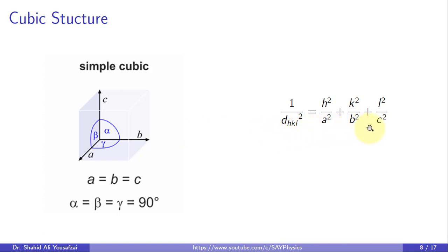This relationship can be expressed mathematically as 1/d² = h²/a² + k²/b² + l²/c². For the cubic system, where a = b = c, the equation can be arranged to give the formula for d_hkl as d_hkl = a / √(h² + k² + l²).